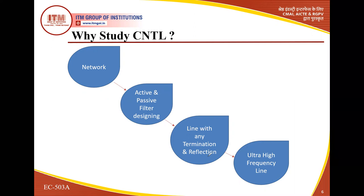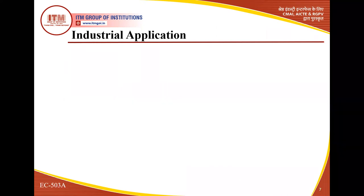Line with any termination and reflection: whenever we transfer power or signals over a line, there is a requirement for minimum reflection. Reflection is a very important considerable factor, so we concentrate on reflection and termination — what type of termination is required so that reflection is minimum. When reflection is minimum, losses are minimum and maximum information is transferred. At last, ultra-high frequency lines are used where we use the Smith chart for calculating parameters over the transmission line.